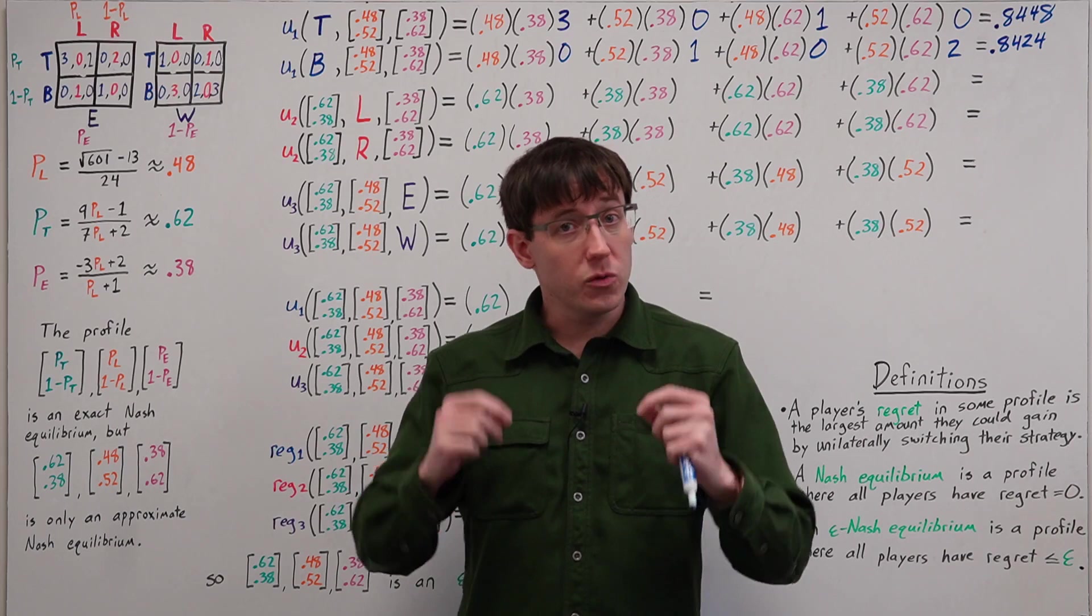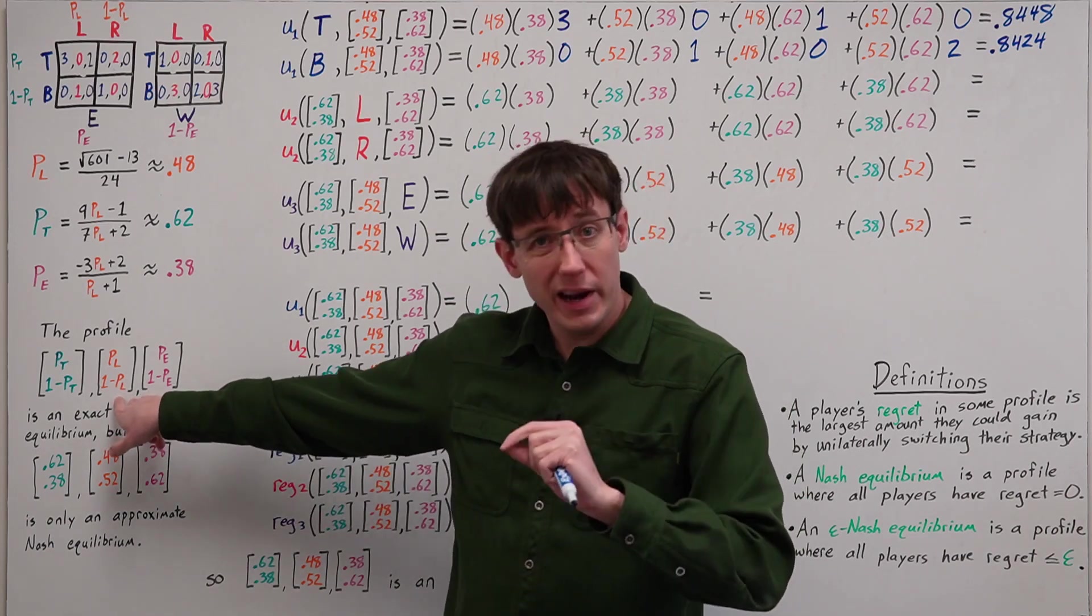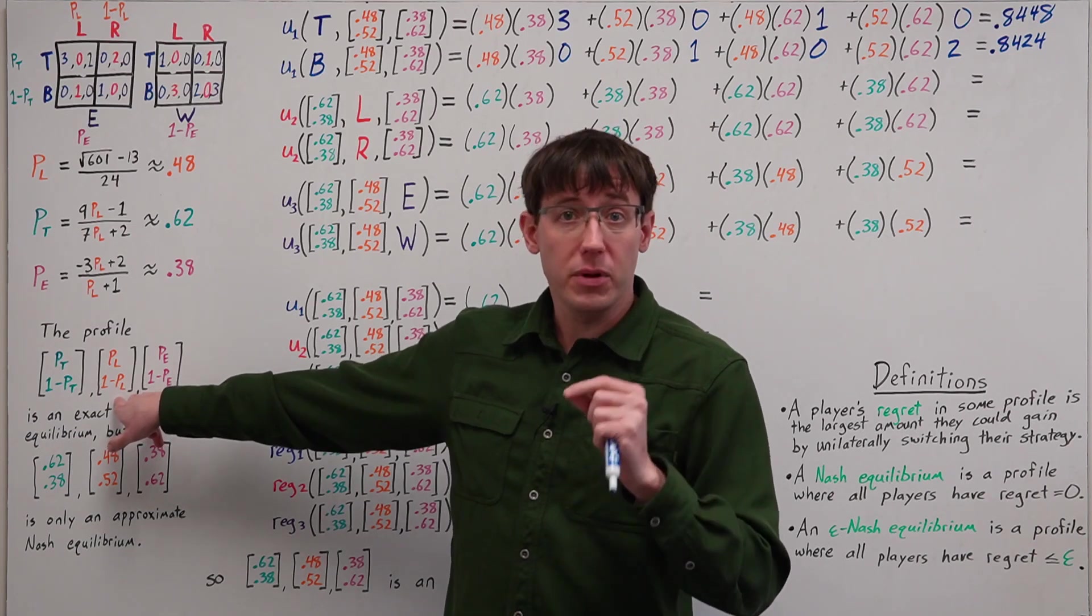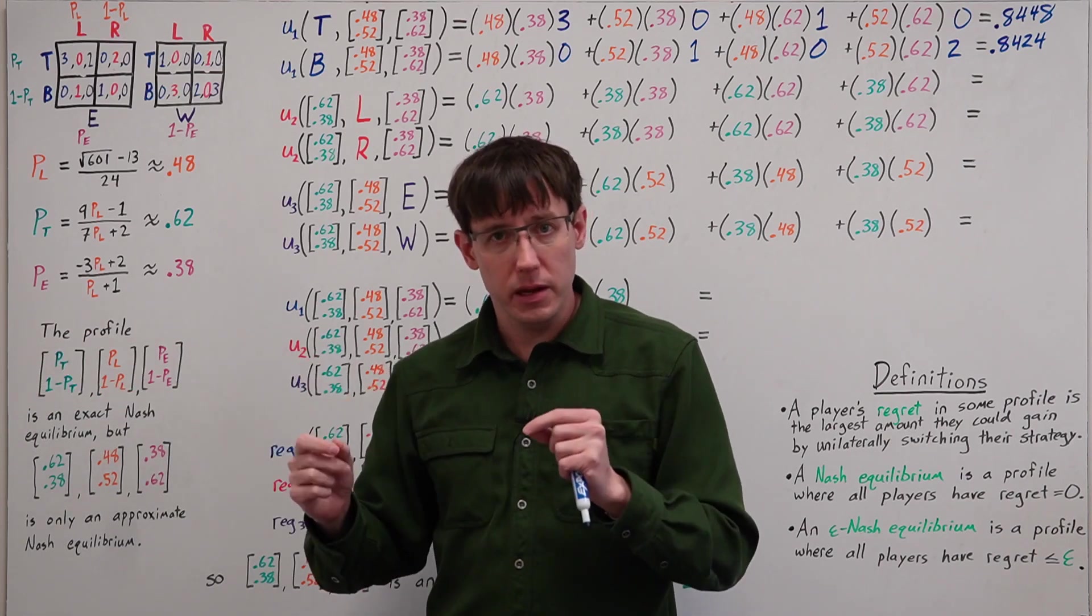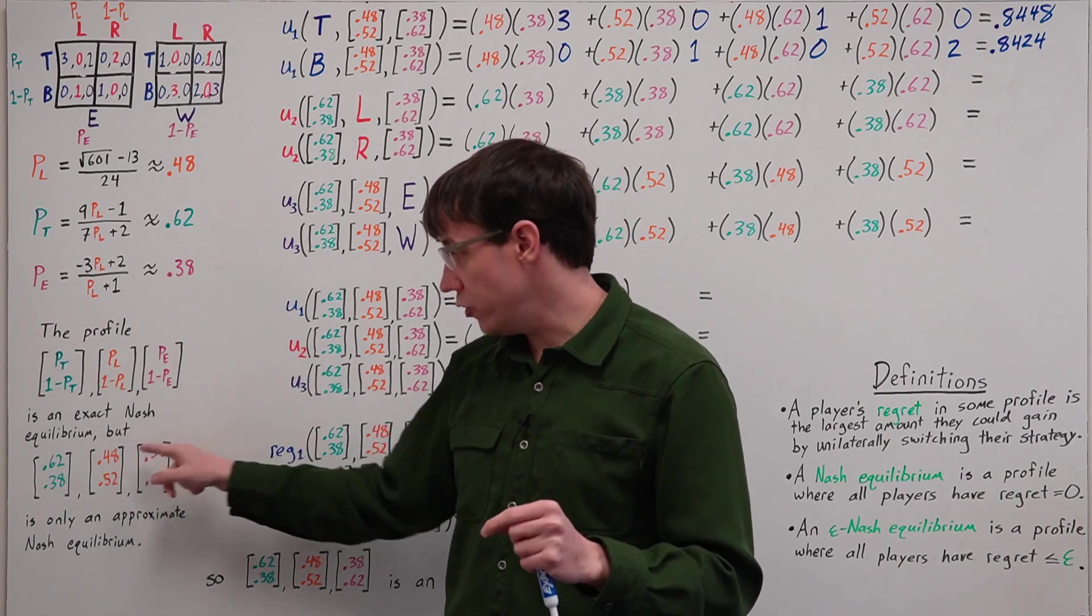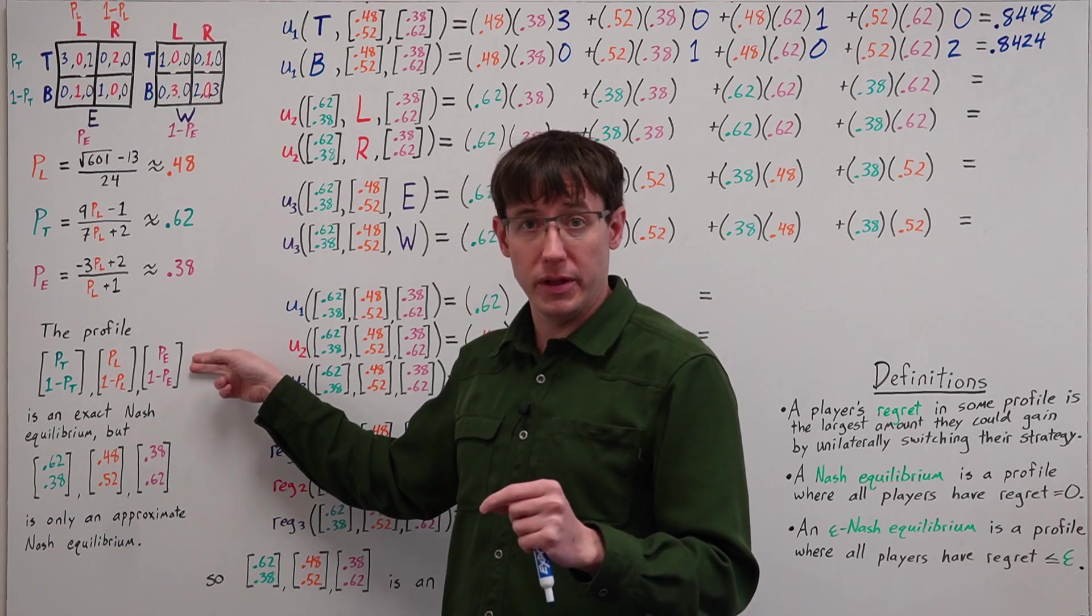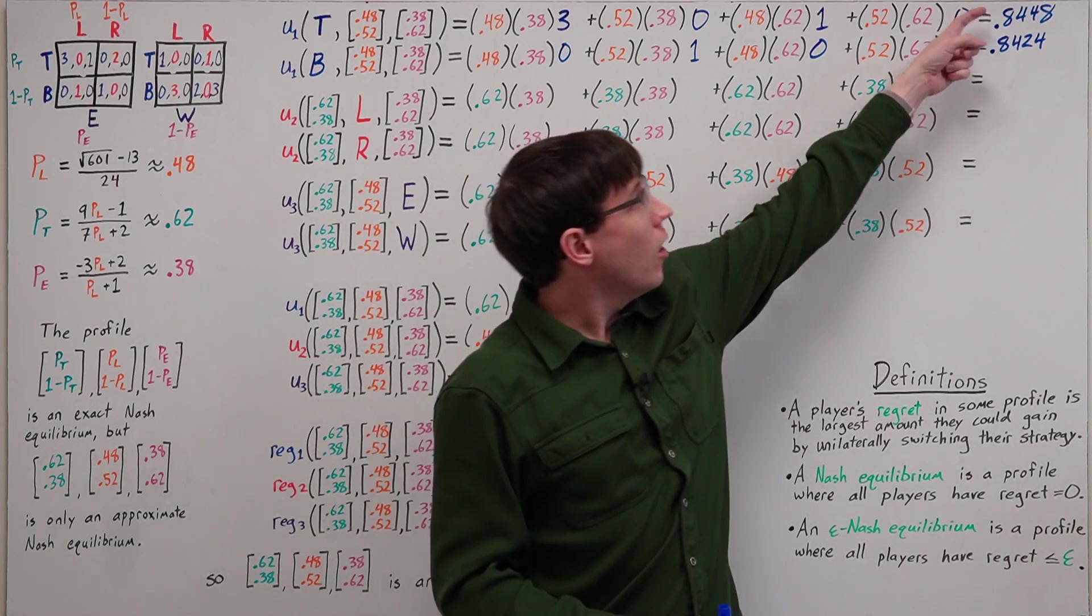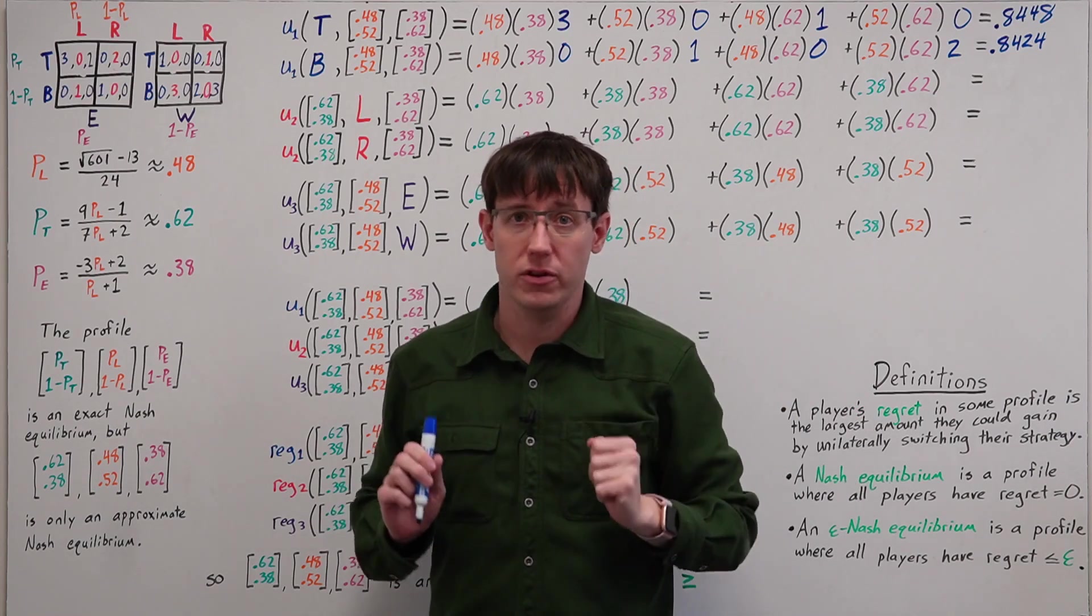And this should make sense because we know that in the exact Nash equilibrium, the randomizations that players two and three are doing should make player one exactly indifferent between T and B. But in this profile, we have probabilities for players two and three that are not exactly the equilibrium probabilities, but they're close. And so we should expect that player one will be almost but not exactly indifferent between their actions.